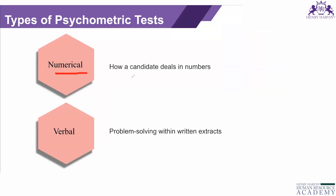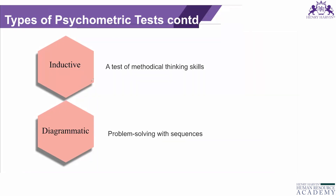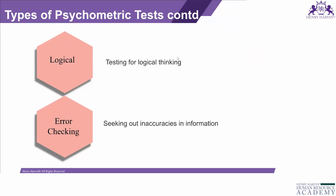There are different kinds of psychometric tests. Numerical tests require dealing with numbers; verbal tests involve problem solving within written extracts and verbal reasoning; inductive tests are based on pattern analysis; diagrammatic tests involve problem solving with sequencing; logical tests assess logical thinking; and error checking tests require you to identify whether the given information is accurate or find inaccuracies. These are the different types of psychometric tests.